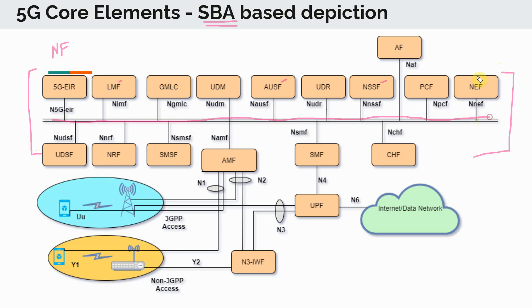All these network functions are connected. And if, for example, this network function wants to interact with the AMF, which is access mobility function, they can talk to each other using this common communication channel. And then there are well defined APIs that they can use for communication.